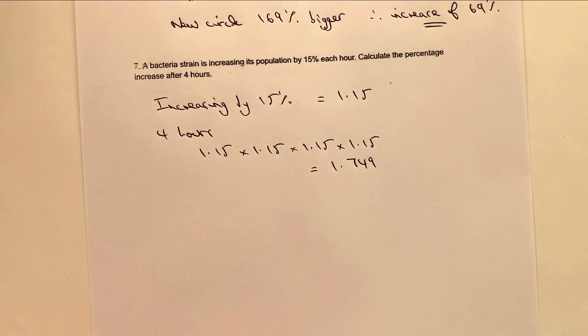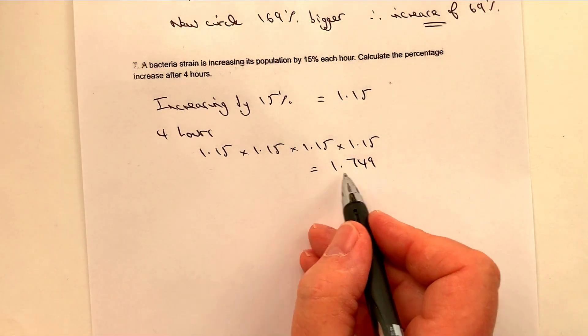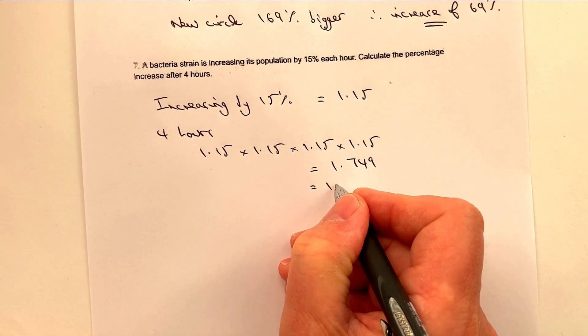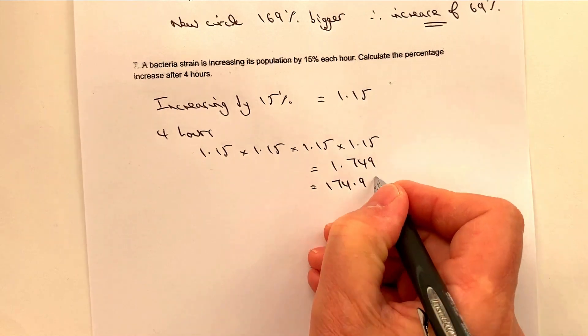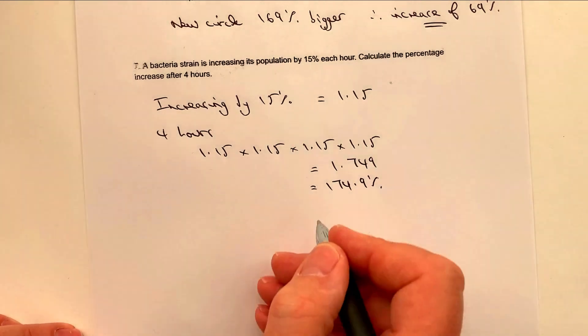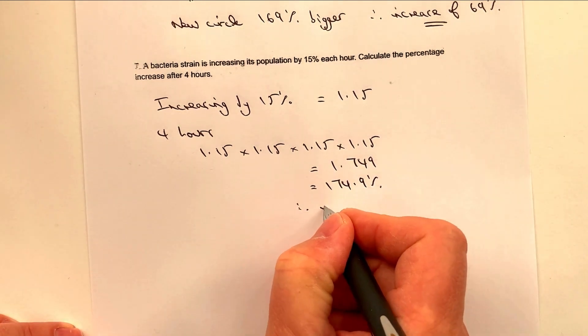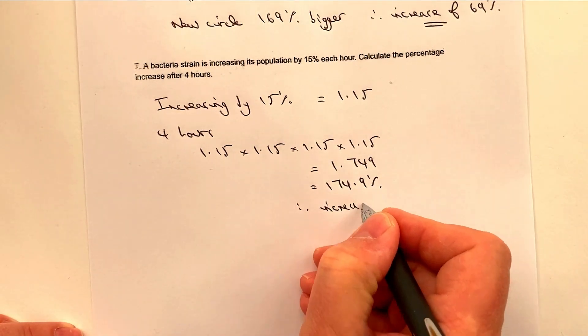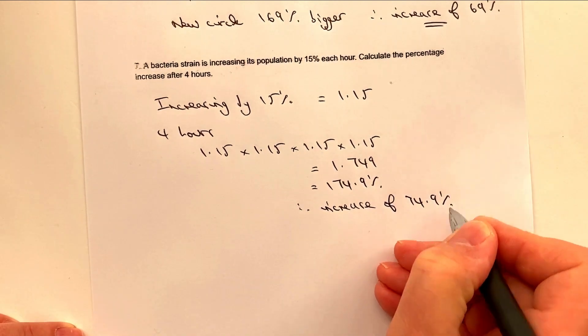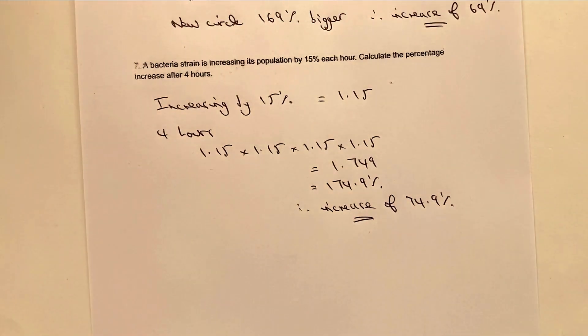So in other words, the decimal equivalent is 1.749. But the percentage is 174.9 percent. If I multiply that through by 100, if you prefer. So in other words, what we're saying is the percentage increase after four hours from 100 percent is an increase of 74.9 percent. And that's the answer to this particular question.